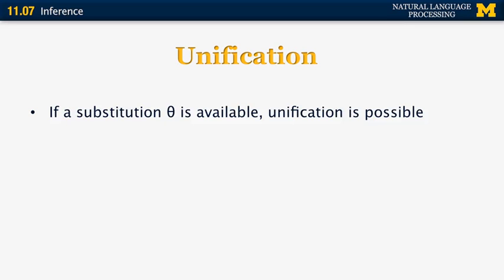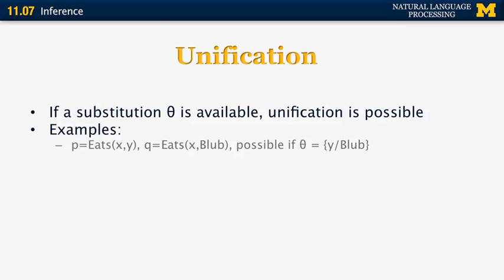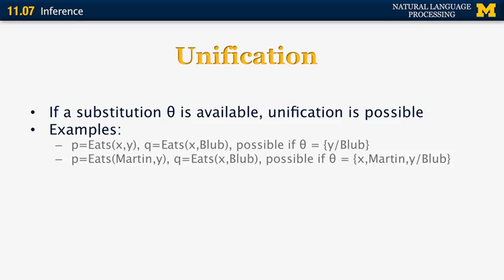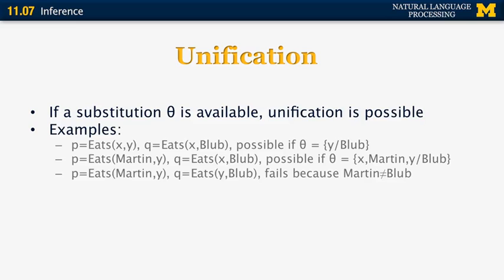Unification is done when you have a possible substitution. For example, if we have statement P: X eats Y, and statement Q: X eats blob, it's possible to unify those two under the substitution that replaces variable Y with the specific object blob. Another example: if P is Martin eats Y and Q is X eats blob, it's possible to unify those using the substitution X = Martin and Y = blob. However, if P is Martin eats Y and Q is Y eats blob, it's impossible to unify them because we would need Y = Martin and Y = blob simultaneously, and since Martin and blob are different, the unification process fails.